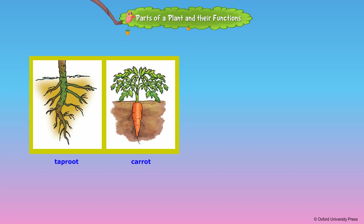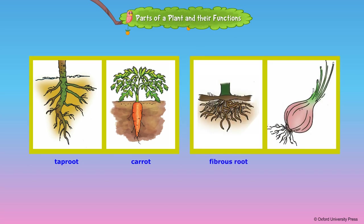When a number of roots grow from the end of the stem, they are said to be fibrous roots. Onion, grass and rice have fibrous roots.